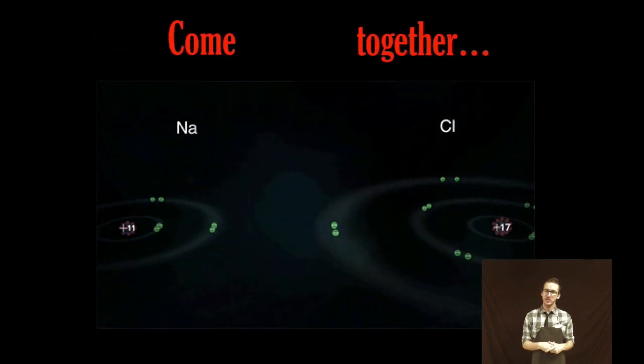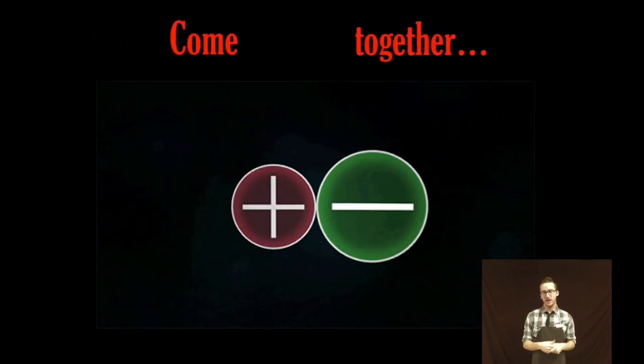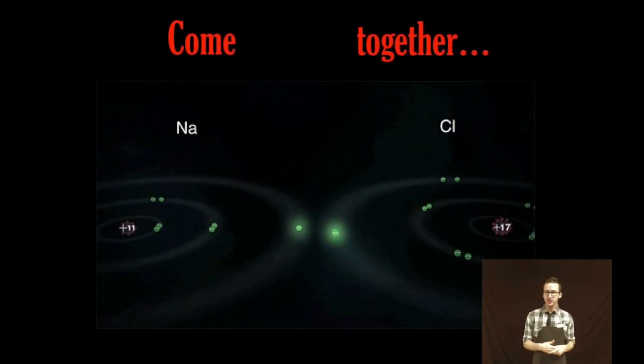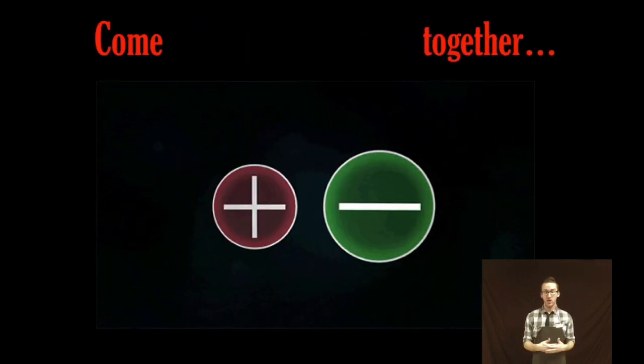So as I come back to this animation, recognize that it's the sodium atom, the metal, that is losing the electron to form the positive ion or cation.